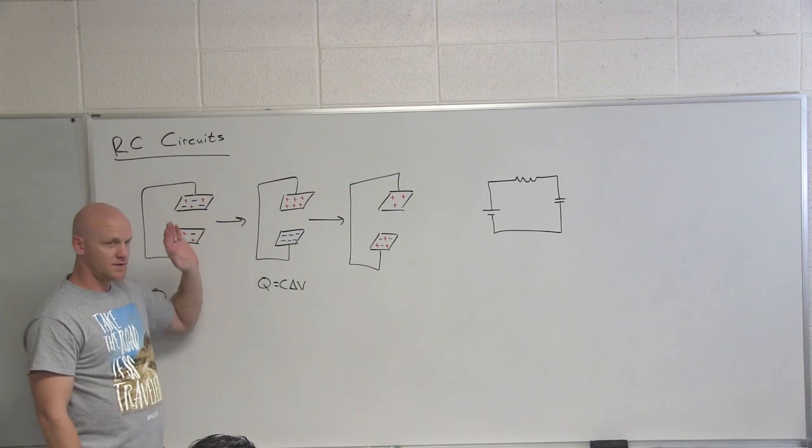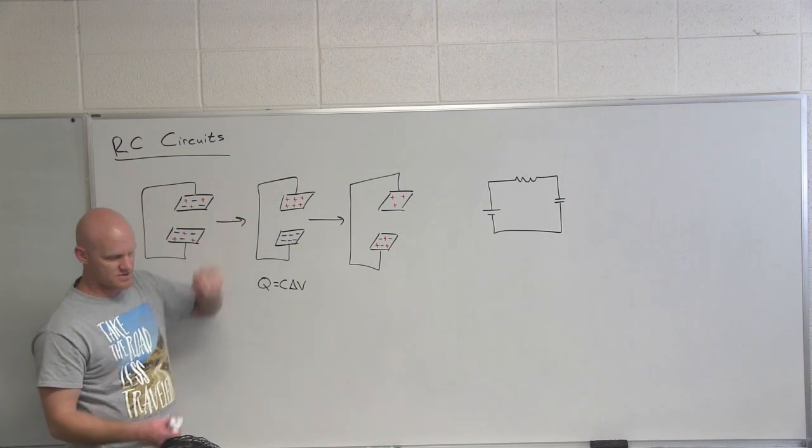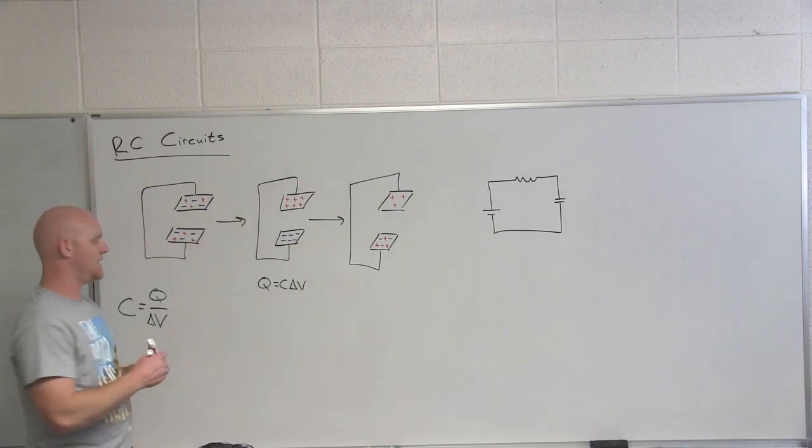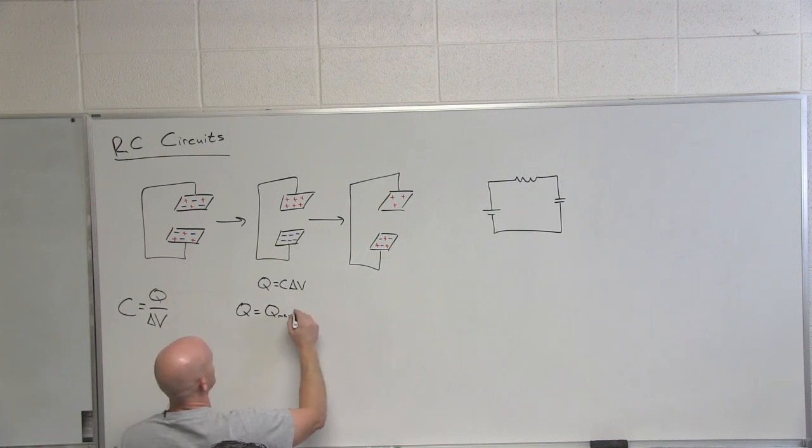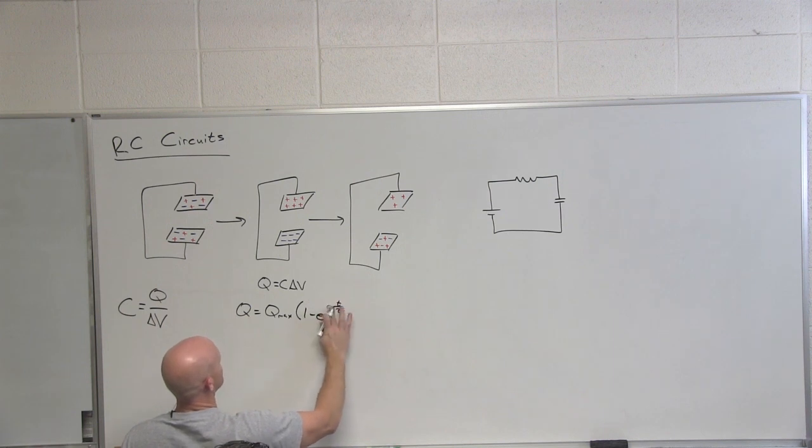Eventually, it's going to asymptotically approach that. It turns out it doesn't reach there right away, and it turns out there's an equation that shows you how that charge builds up. Q equals Q max times 1 minus E to the negative T over tau.